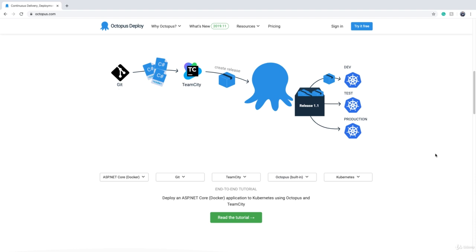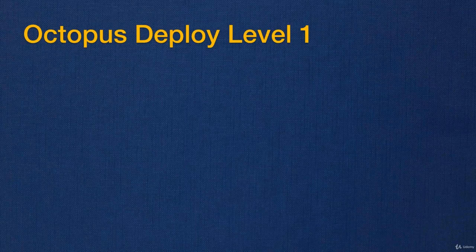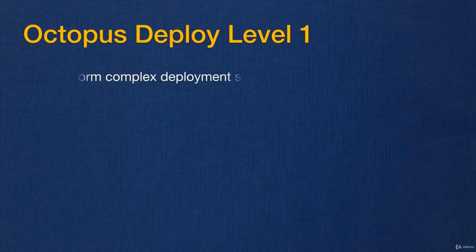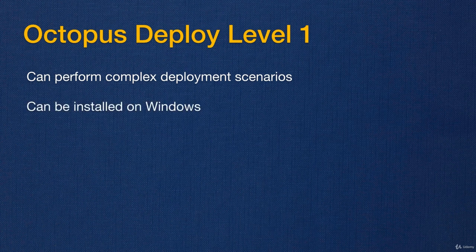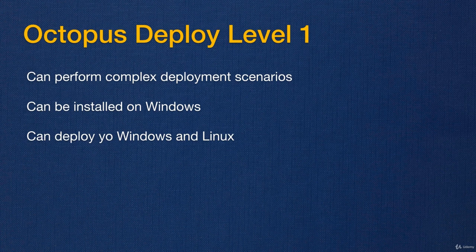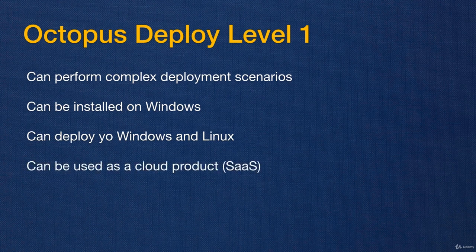By looking at this interactive diagram you get a good understanding of how the flow works. Now let's look at the features of Octopus Deploy. It can perform complex deployment scenarios that you cannot normally implement with just TeamCity or other CI tools such as Bamboo or Jenkins. It can be installed on Windows if you want to host it yourself, but you are not limited to deploying to Windows machines only — you can deploy to both Windows and Linux-based operating systems.